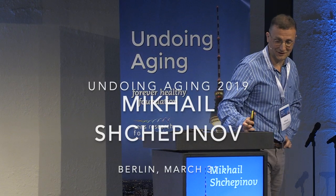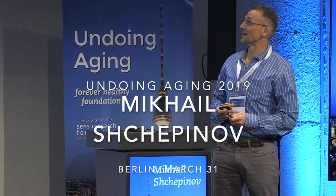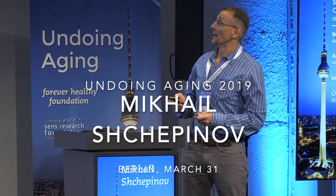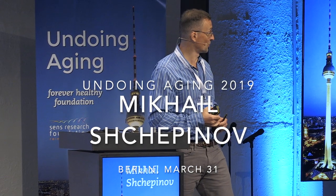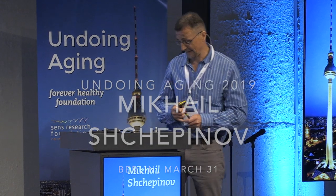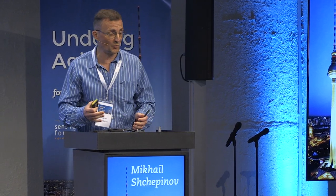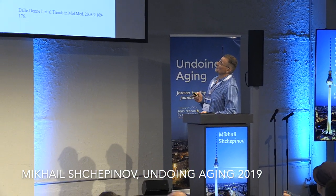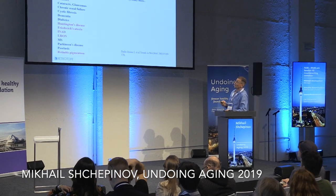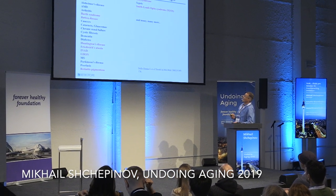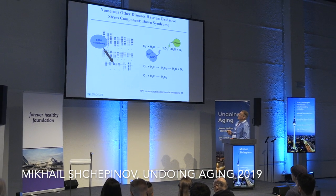Good morning everybody, and first of all great thanks to the organizers for letting me present our stuff. I don't need to explain how many diseases have an oxidative stress component in their etiology — I'd say it's probably just about every disease we can think about. What's in red here are orphan diseases and the rest in black are main diseases — it's just a short list of all possible diseases with an oxidative stress component.